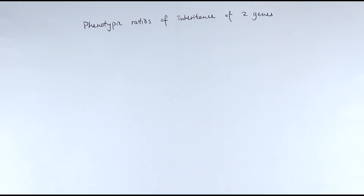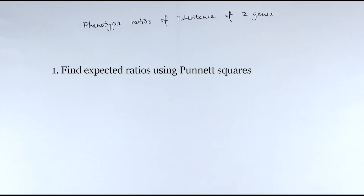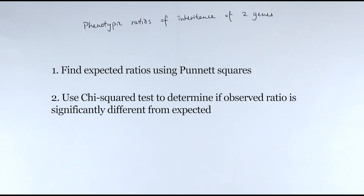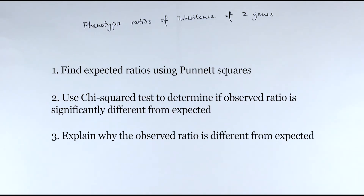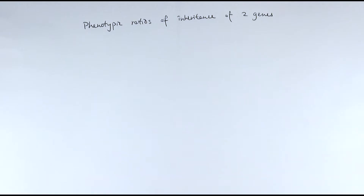In this video, we'll be looking at phenotypic ratios of inheritance of two genes. The way we're going to tackle this is by thinking about it in terms of exam questions. In questions about this general topic, we'll be asking you to do a Punnett square to predict what the genotypic and phenotypic ratios might be. Another type of question would say you've predicted the expected ratios, but the observed one would be different. Then it's about how do you find out if there is a significant difference between them and try to explain that unexpected ratio. So that's how we're going to tackle it.